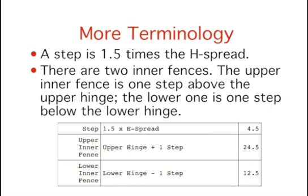For the women, a step is 1.5 times the h-spread of 3 and equals 4.5. Recall that the upper hinge is 20. Therefore, the upper inner fence is 20 plus 4.5, which equals 24.5. The lower hinge is 17. Therefore, the lower inner fence is 17 minus 4.5, equaling 12.5.